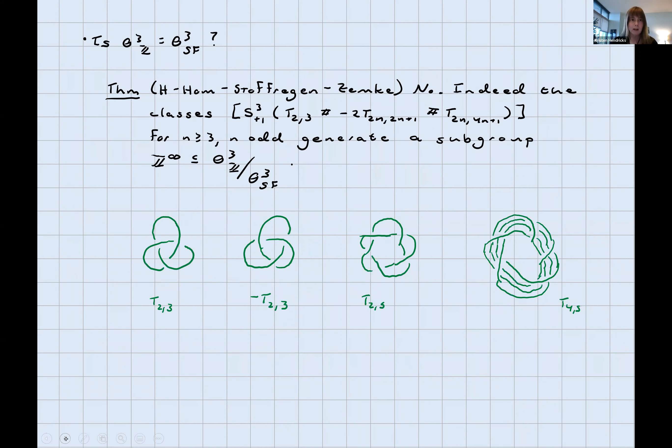So you can ask, is theta 3Z equal to the subgroup theta 3SF? The main theorem of today is that the answer is no. Indeed, the classes that are plus one surgery on some connect sum of torus knots, where n is greater than or equal to three, n odd, generate a Z infinity subgroup in the quotient of the homology cobordism group by the group generated by the Seifert-fibered spaces. So this concludes part one of the talk. Now let me tell you where the theorem is coming from.